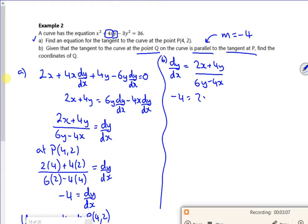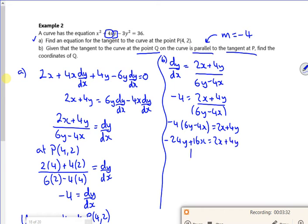So minus 4 equals 2x plus 4y over 6y minus 4x. Take this bottom line up. I could have actually divided that whole function by 2, but you don't mind. It'll cancel out in a minute. So we've got minus 24y plus 16x equals 2x plus 4y. Take the x's over, 14x. Take the y's over, 28y. So x is 2y.